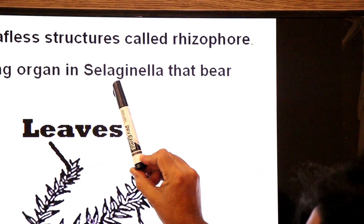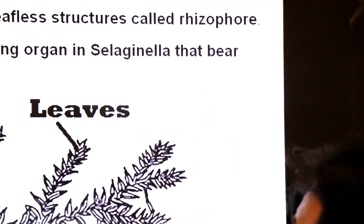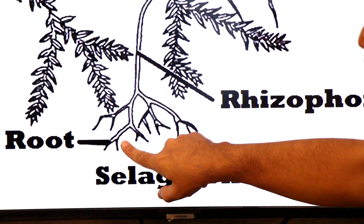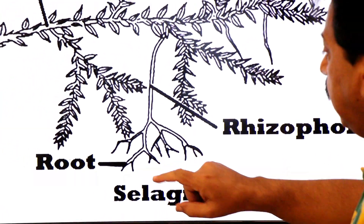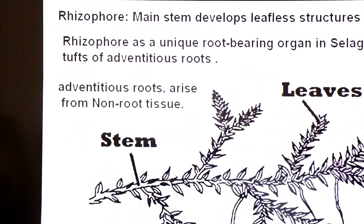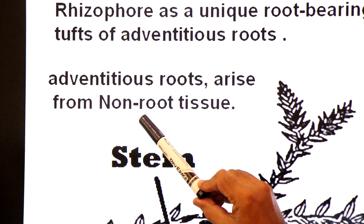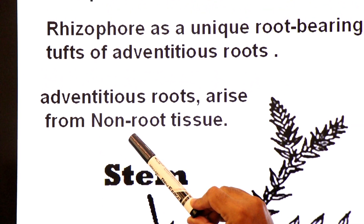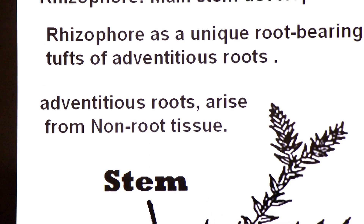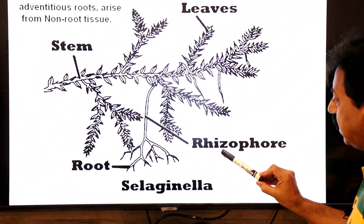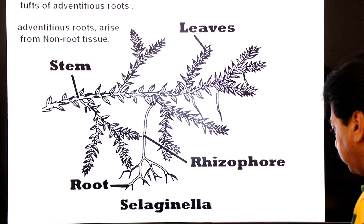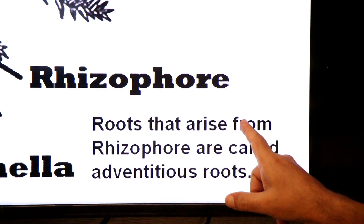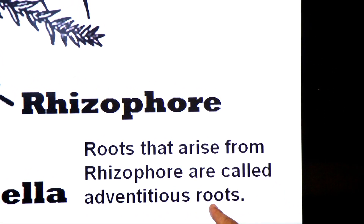Rhizophore is a unique root-bearing organ in Selaginella, which is a heterosporous plant of Lycopsida, that bears a tuft or group of adventitious roots. Adventitious roots arise from non-root tissue — they do not arise from embryonic radicles but from the stem, or in the case of Selaginella, from the rhizophore.